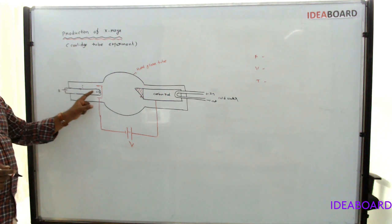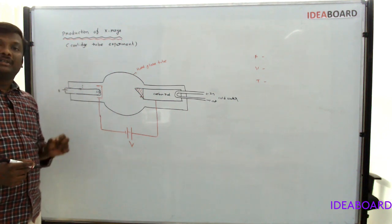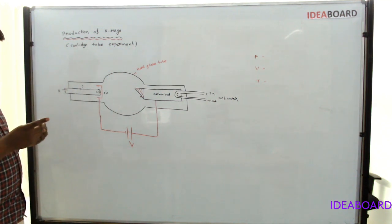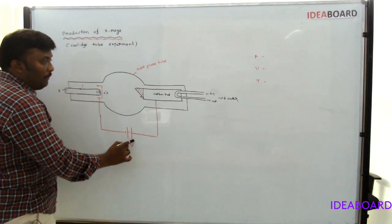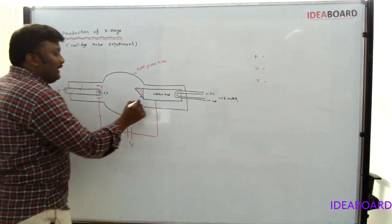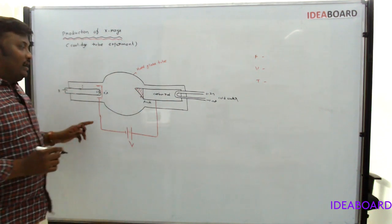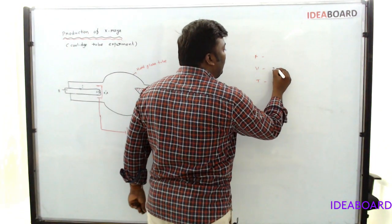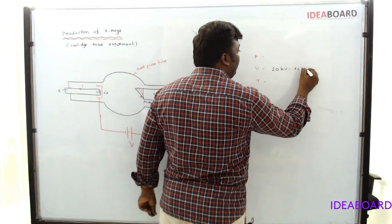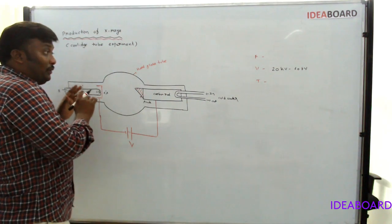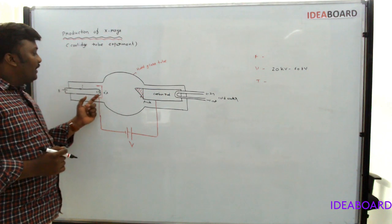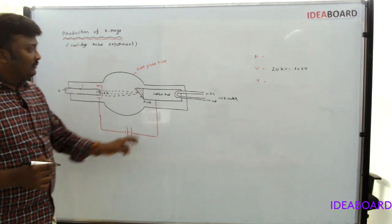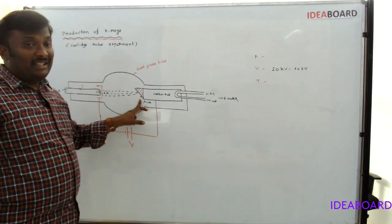When current is sent to the filament, the filament heats up. Due to thermionic emission, electrons are emitted from the filament. These electrons have a negative charge. The target acts as an anode with a positive charge. Due to the attraction between the negative electrons and positive anode, and the high potential difference applied — nearly 20 kV to 60 kV — the electrons emitted from the filament move with very high energy and collide with the target.